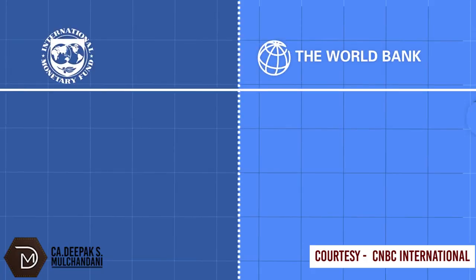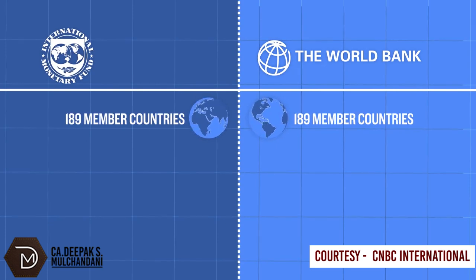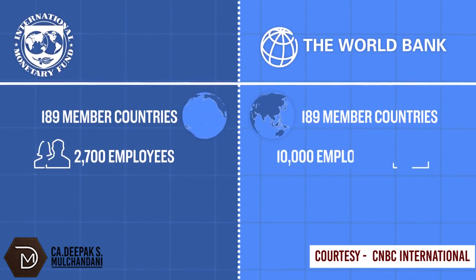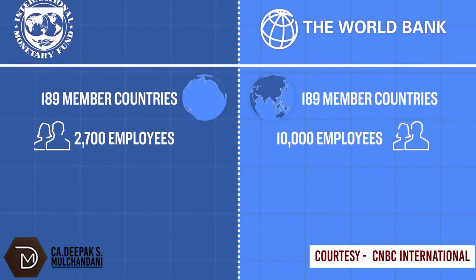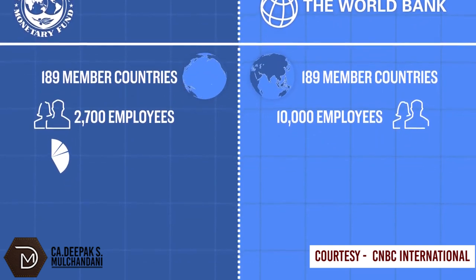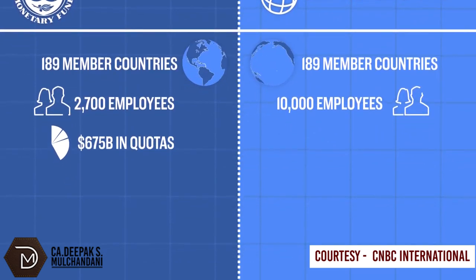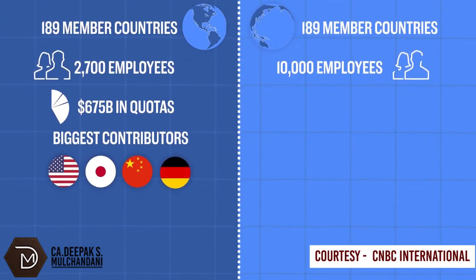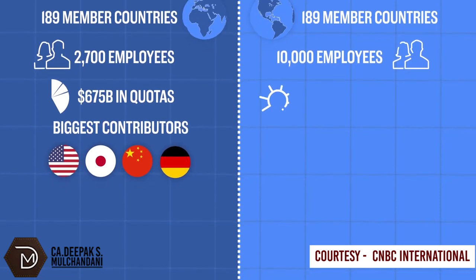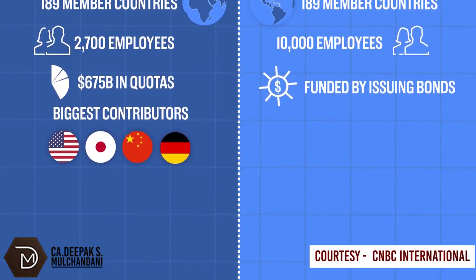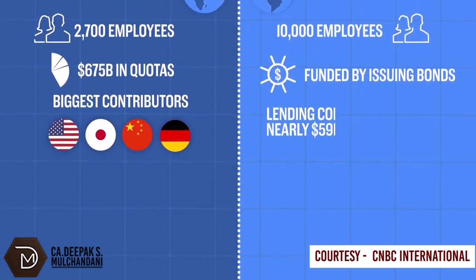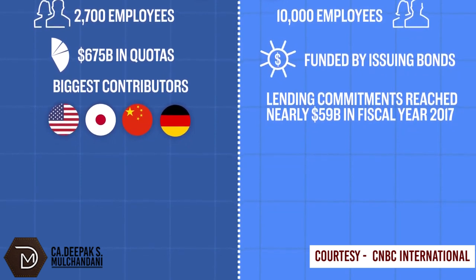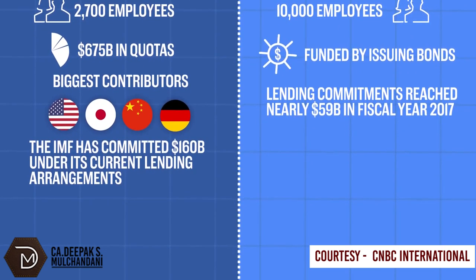Both institutions include 189 member countries, but the IMF has around 2,700 employees, compared to the World Bank staff of 10,000. The IMF is funded mainly by quotas — basically subscription fees from member countries — receiving around $675 billion in quotas, with the U.S., Japan, China, and Germany contributing the most. The World Bank is financed mostly by issuing bonds to global investors. The group's lending commitments reached nearly $59 billion in fiscal year 2017, while the IMF has committed $160 billion under its current lending arrangements.